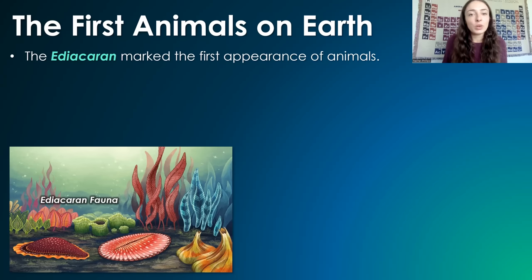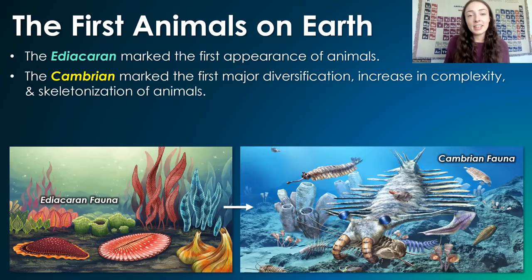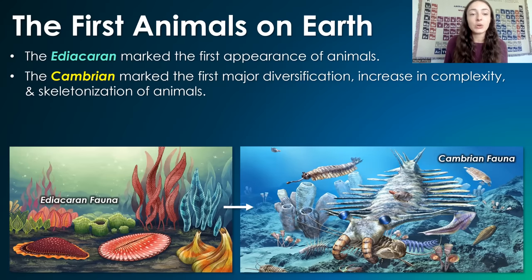Just to set the scene of when this was all going on, in the Ediacaran period of Earth's history around 635 to 540 million years ago, the very first animals on Earth were evolving. Then in the Cambrian period, just after the Ediacaran, from 540 to around 485 million years ago,